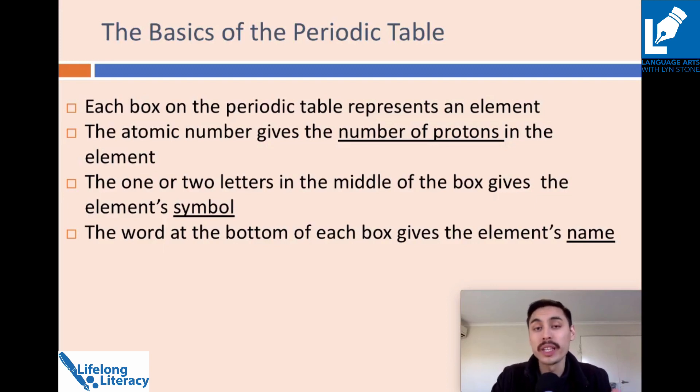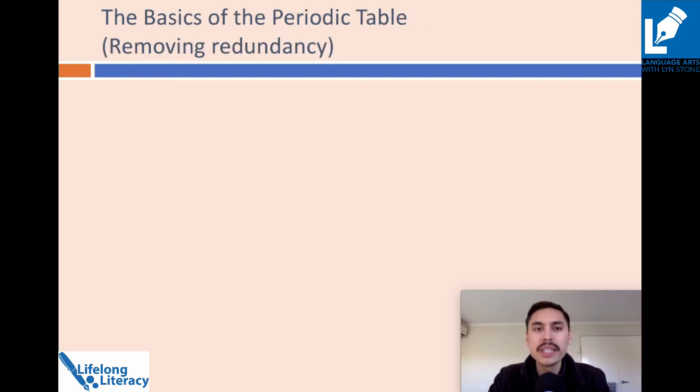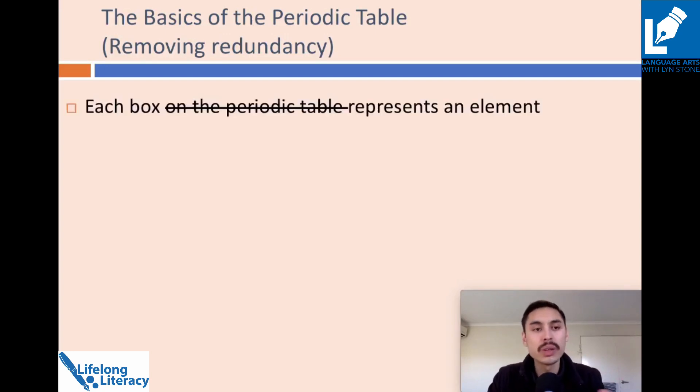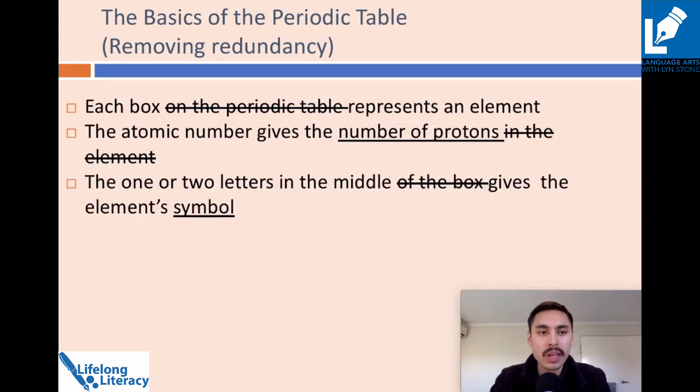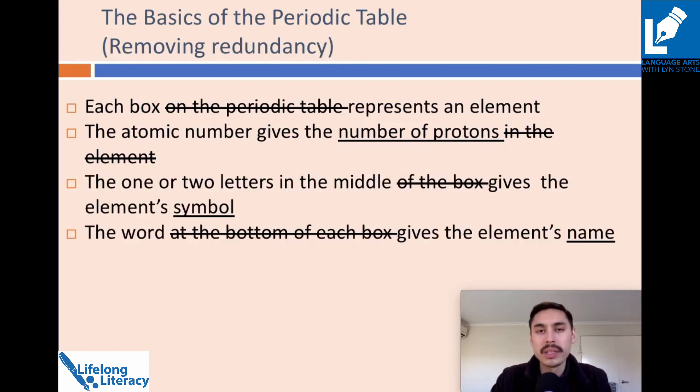But today, we're going to have a look at two that come from cognitive load theory. The first idea is the redundancy effect. And the redundancy effect, I summarize as eliminate unnecessary information and do not replicate necessary information. So if we were to apply the recommendations of the redundancy effect to this set of slides, it could look as follows: Each box represents an element, the atomic number gives a number of protons, the one or two letters in the middle gives the element symbol, and the word gives the element's name.